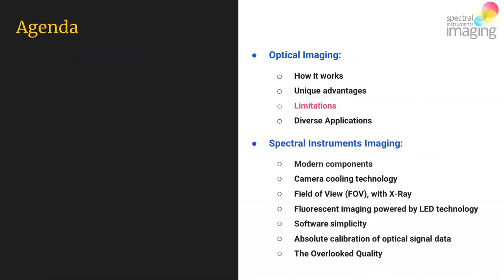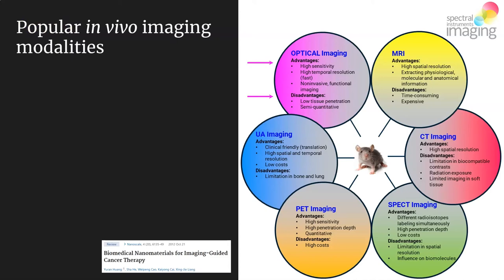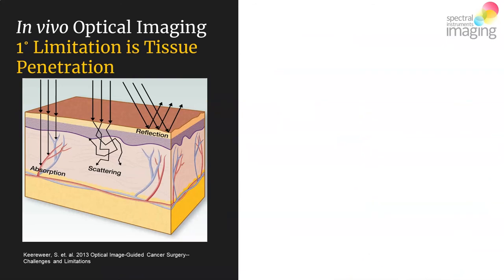This leads into the limitations of in vivo optical imaging. The primary limitation is tissue penetration — the ability of light to pass into tissue is limited by a variety of factors. First, I want to acknowledge all the imaging modalities available to the preclinical investigator: MRI, CT, SPECT, PET, and ultrasound, for starters. All of these are complementary — they each have unique strengths and specific disadvantages — and the primary shortcoming of optical is the ability of light to penetrate tissue. Light entering tissue can get absorbed, scattered, or even reflected off the surface, never reaching the probe.